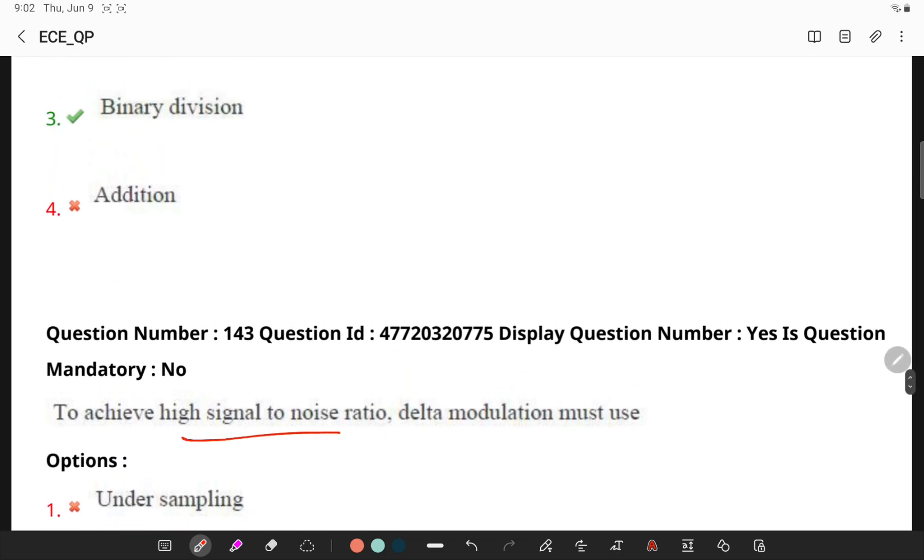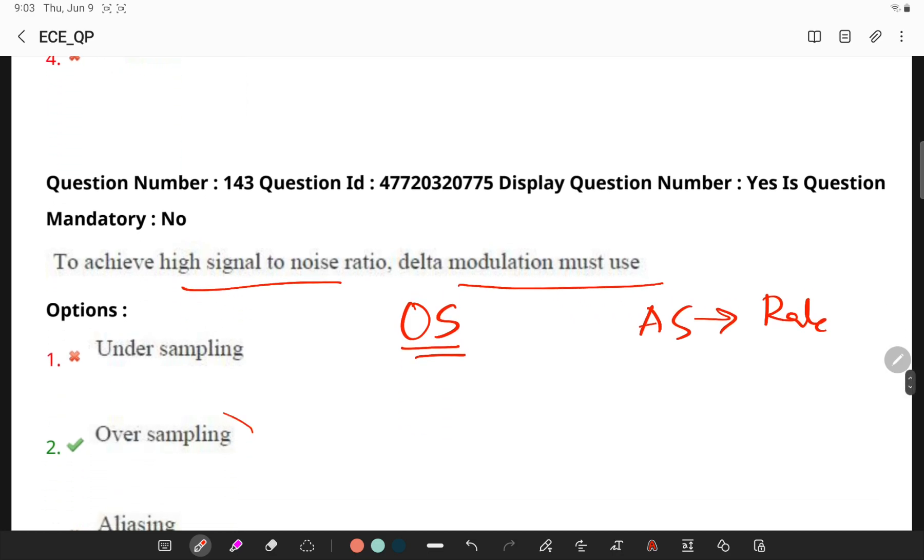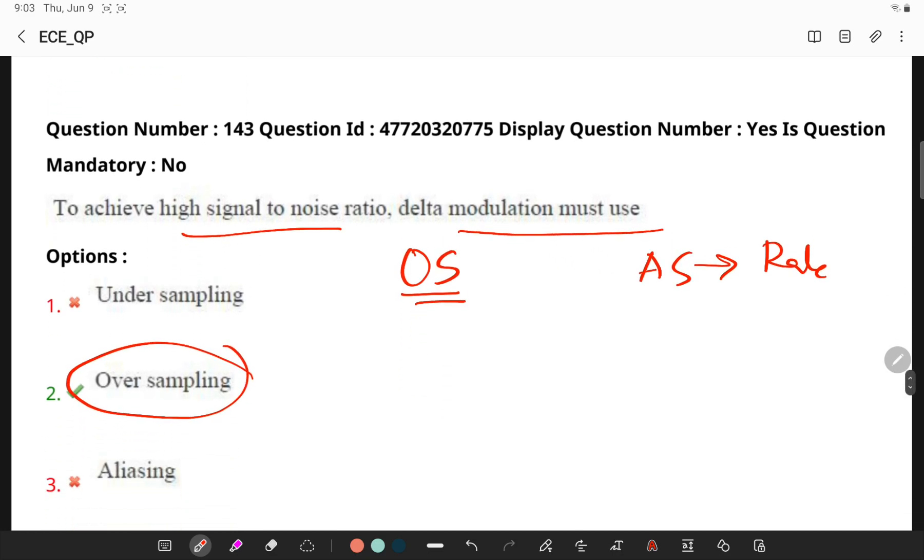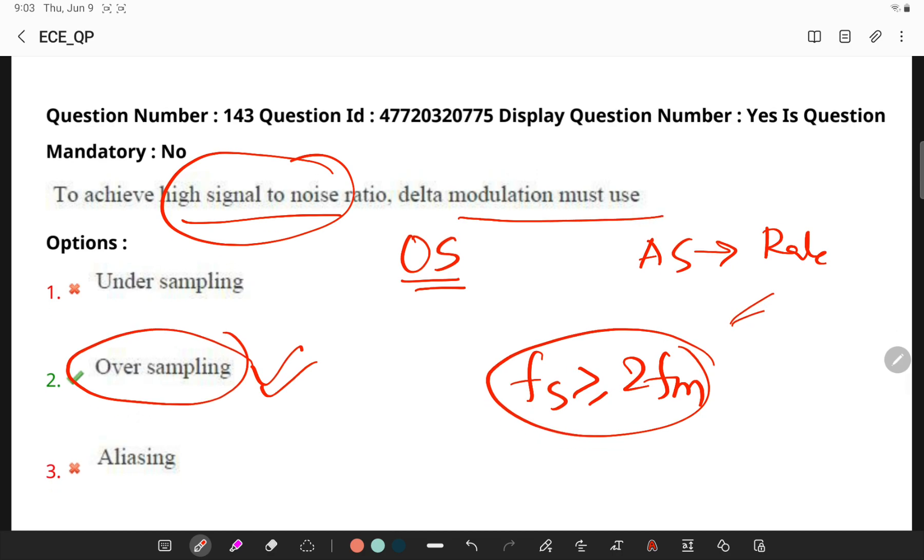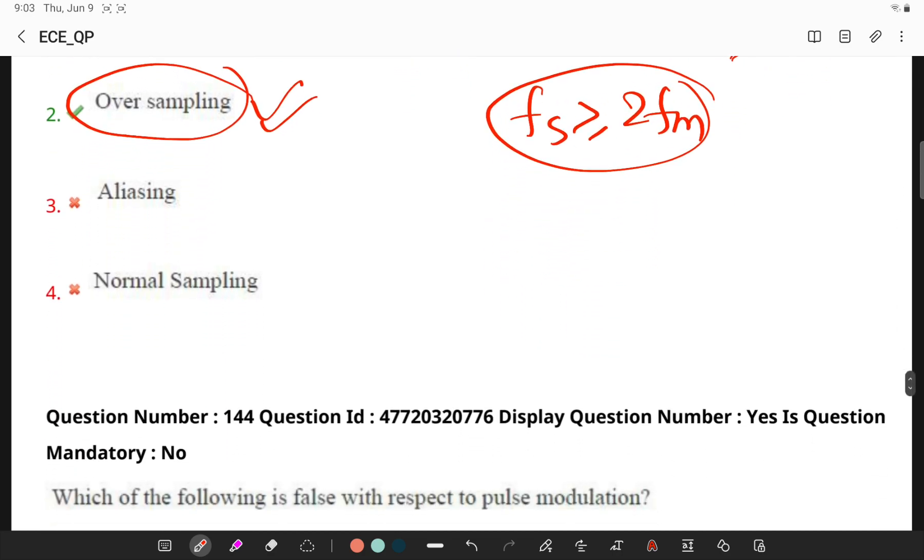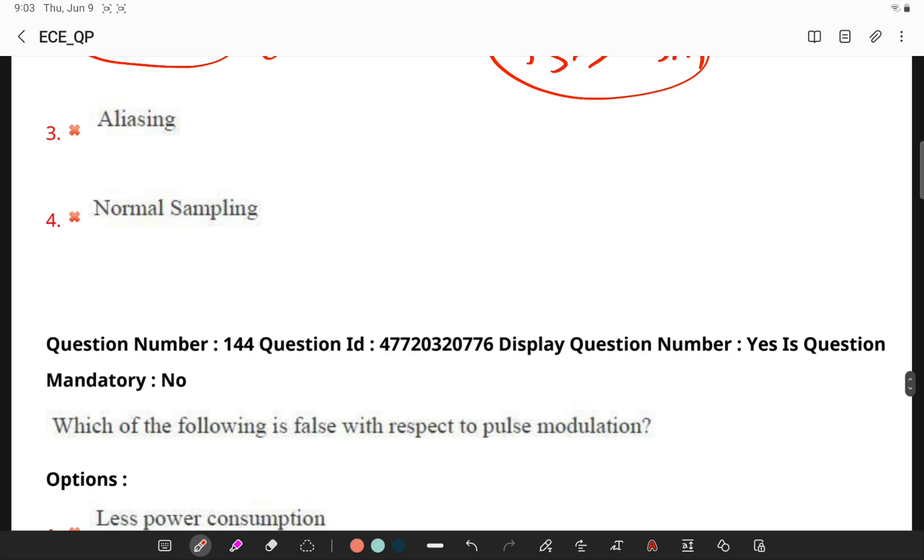Next, CRC is basically a binary division technique. To achieve high signal to noise ratio, delta modulation must have oversampling techniques, that is, analog signal is sampled at a rate which is higher than the Nyquist rate. So if you remember, fs must be greater than or equal to 2 fm, so you will be using a very high sampling for high signal to noise ratio in a delta modulator.